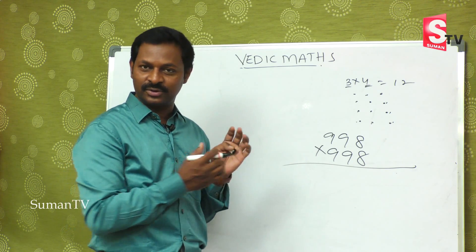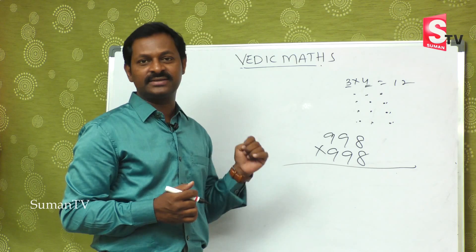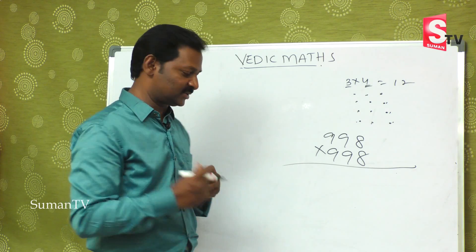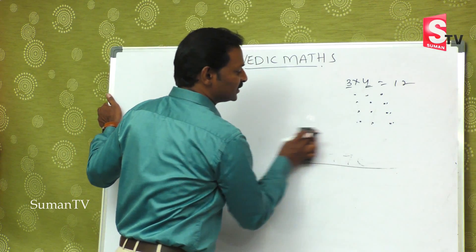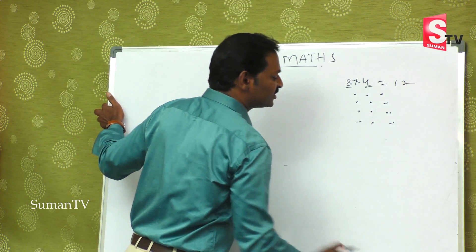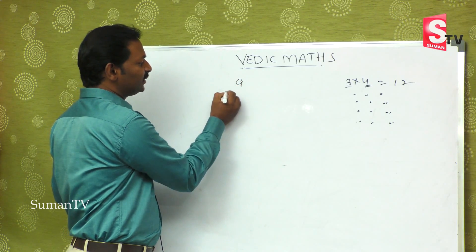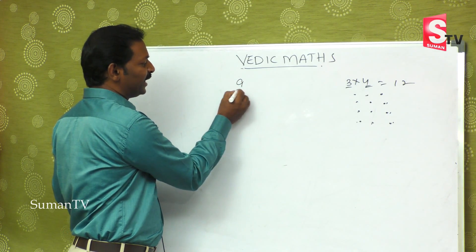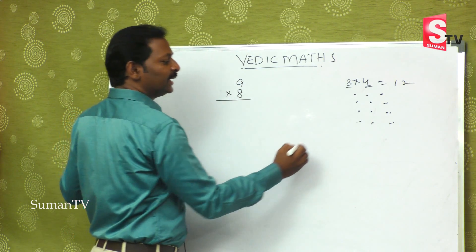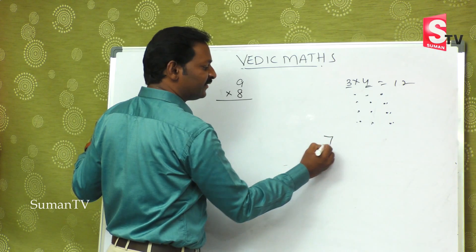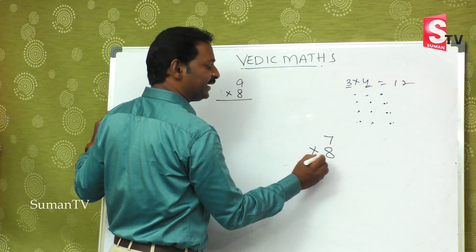Today we will discuss about these things in our classroom. First, I will start with a small number. Suppose 9 is multiplied by 8. So 7 is multiplied by 8.